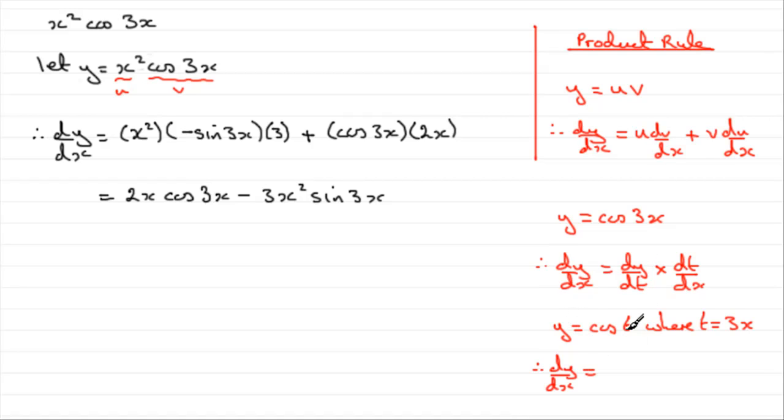Well, if you differentiate cos t with respect to t, you get minus sine t. So that'd be minus sine, but t is 3x. So we can just put that in. Now we have to multiply it by dt by dx. And t was 3x. So you just multiply that by a differential of 3x, which is 3.